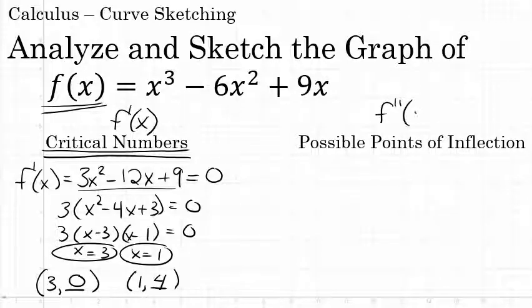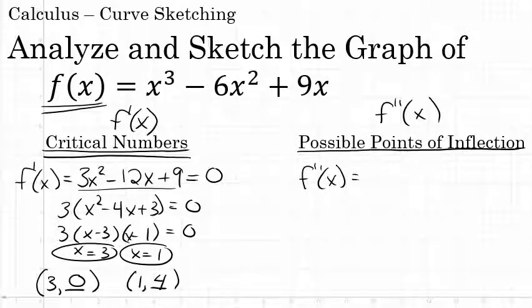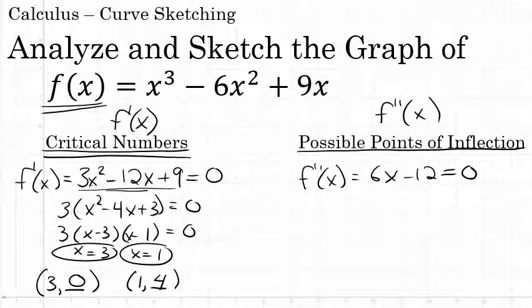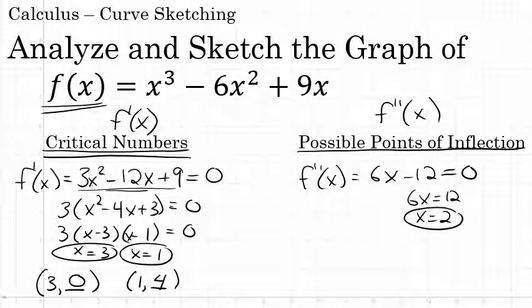The next step is to find the possible points of inflection. The possible points of inflection come from the second derivative — they are x values where the second derivative is equal to zero. Taking the first derivative and differentiating each term: the derivative of 3x² is 6x, the derivative of -12x is -12, and the derivative of 9 is 0. So the second derivative is 6x - 12. Setting this equal to zero gives 6x = 12, so x = 2 is the only possible point of inflection.